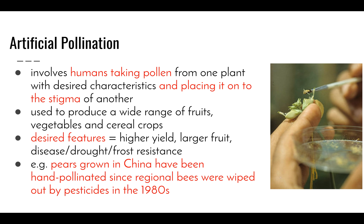The next technique is artificial pollination, which involves humans taking pollen from one plant and placing it onto the stigma of another. The pollen is taken from the plant with the desired characteristics and introduced to the stigma of another plant. This has been used to produce a wide range of fruits, vegetables, and cereal crops. Desired features include higher yield — producing greater crops to feed more people — larger fruit, and disease, drought, or frost resistance, enabling plants to be grown in new areas.